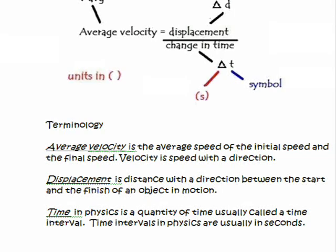The difference between displacement and distance: displacement is the distance with direction between the start and the finish of the object in motion. So if we're only looking for speed, then average speed equals distance divided by time. The triangle for D and T means change, or subtraction. If you have more than one distance or time, you'll need to subtract. In an introductory problem, there's usually nothing to subtract, which makes the math a lot easier.